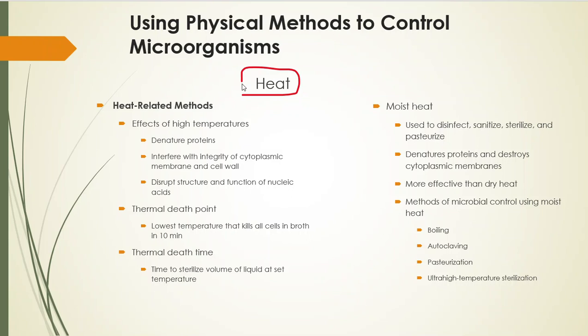Physical methods to control microbes — heat. Heat is a good way; it denatures proteins. We talked about that when discussing high fevers killing people. Heat can also dissociate lipids, causing loss of the plasma membrane, and can disrupt the structure and function of nucleic acids — damaging RNA and even DNA. So high temperatures have this effect on microbes.